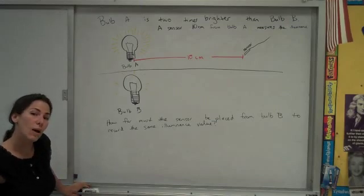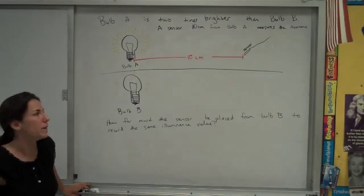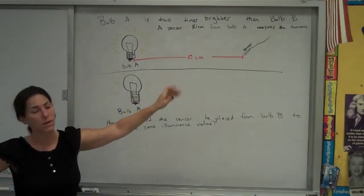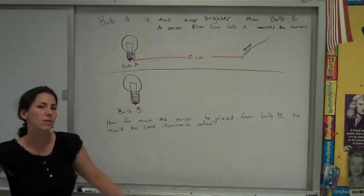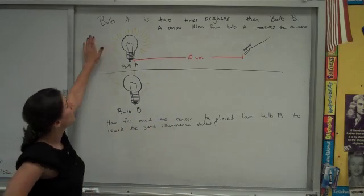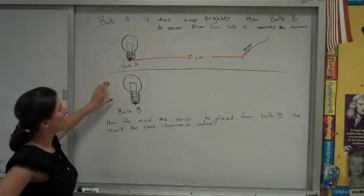Here's the problem about two separate experiments to measure the illuminance. One in which the illuminance a certain distance from bulb A is measured, and one in which the illuminance a certain distance from bulb B is measured. What we know is that bulb A is two times greater than bulb B.